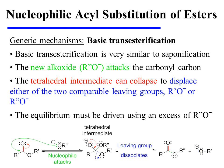As we consider the mechanism for basic transesterification, it will be useful to keep in mind that this reaction is very similar to saponification. In this reaction, the new alkoxide, being a fairly potent nucleophile, directly attacks the carbonyl carbon, pushing the pi bonding electrons onto oxygen and forming a tetrahedral intermediate. This tetrahedral intermediate can collapse to displace either of the two comparable leaving groups — the one bearing the R' group or the one bearing the R'' group. Therefore, the equilibrium must be driven using an excess of the new alkoxide, and the ester incorporating the new R'' alkyl group will be formed as a reaction product.